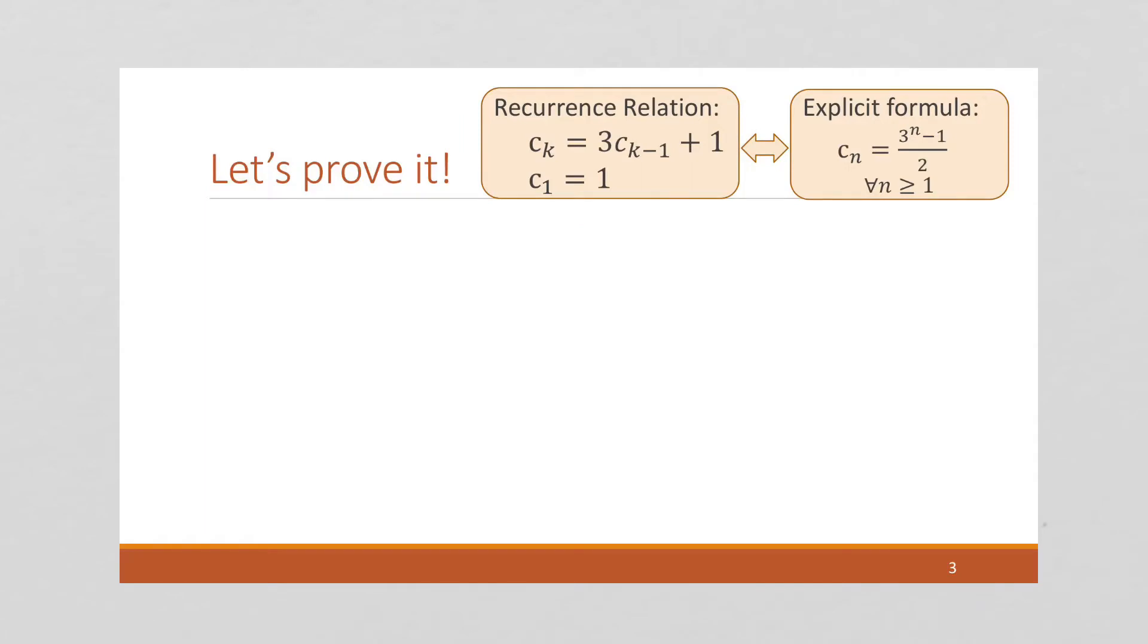If you recall the previous video, this recurrence relation is what was given. And we came up with this explicit formula, our solution. Which means if we're going to prove this, we're going to assume that the recurrence relation is correct, because that's what we were given. The part we're unsure about is our solution. So that's going to play an important part with how we construct our proof.